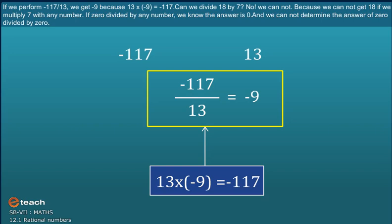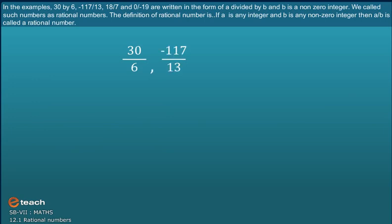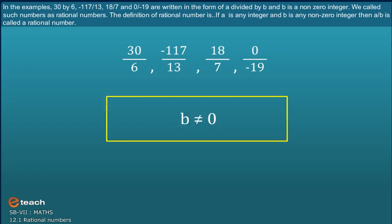Can we divide 18 by 7? No, we cannot. Because we cannot get 18 if we multiply 7 with any of the number. If 0 is divided by any number, we know the answer is 0. And we cannot determine the answer of 0 divided by 0. In the examples, 30 by 6, minus 117 by 13, 18 by 7 and 0 by minus 19 are written in the form of a divided by b and b is a non-zero integer. We call such number as rational numbers. The definition of a rational number is, If a is any integer and b is any non-zero integer, then a by b is called as a rational number.